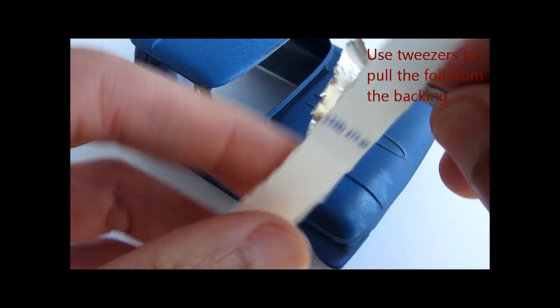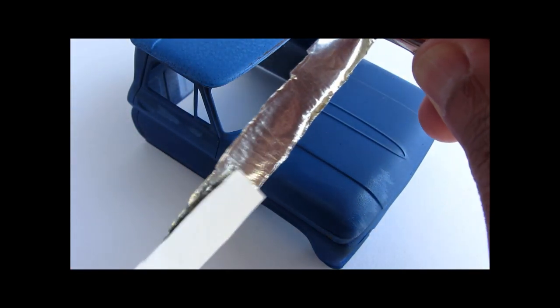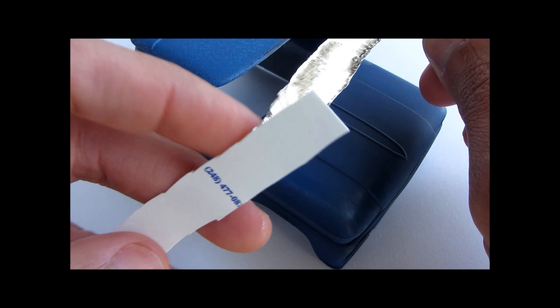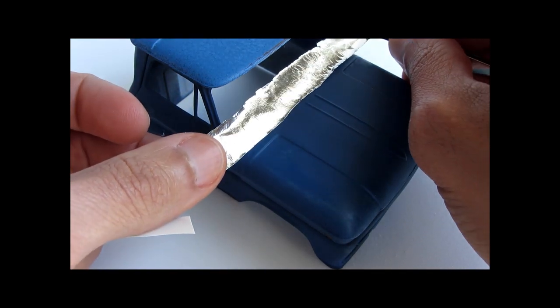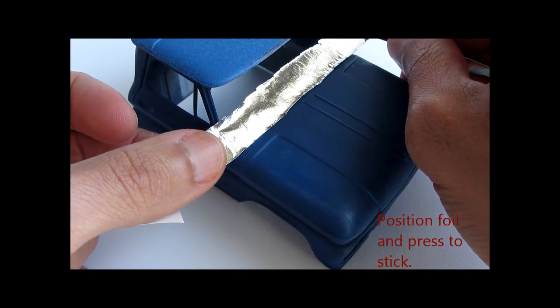Use tweezers to pull the foil away from the paper backing and just press it on the model. There's adhesive on the back so it should stick.